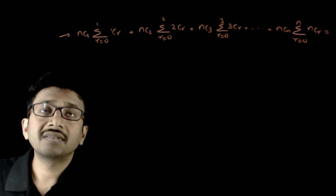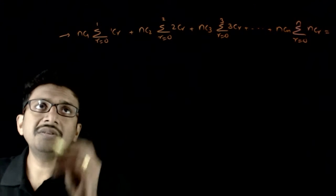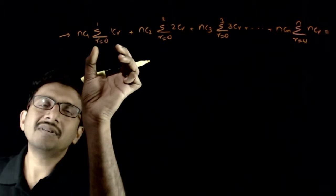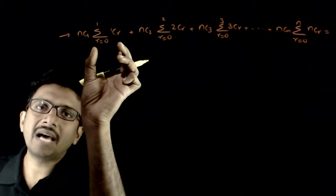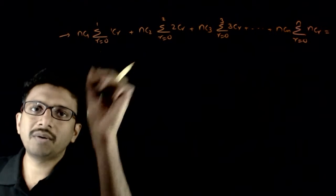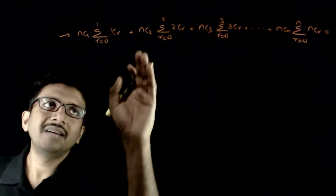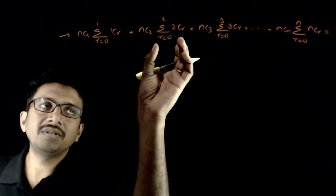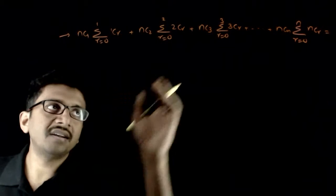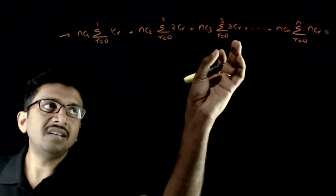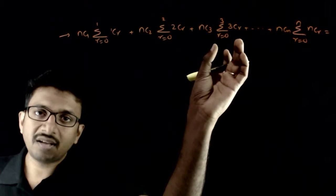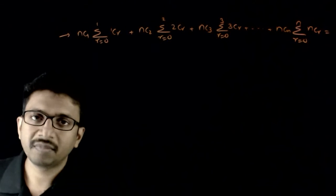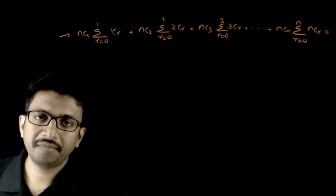Welcome students. In this question, you are asked to find NC1 times sigma(r=0 to 1) 1Cr, plus NC2 times sigma(r=0 to 2) 2Cr, plus NC3 times sigma(r=0 to 3) 3Cr, and so on up to NCn.